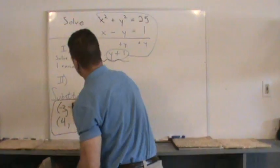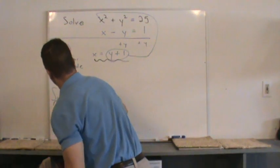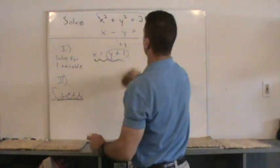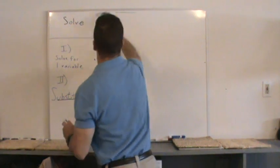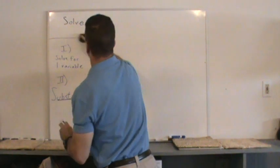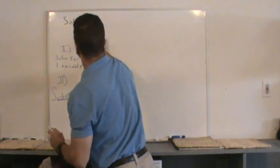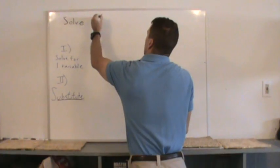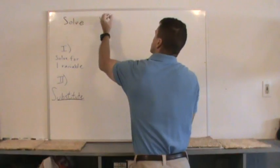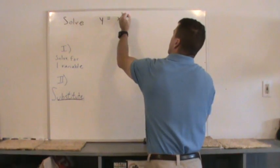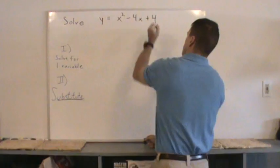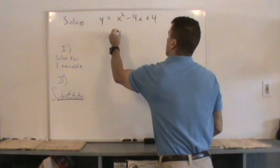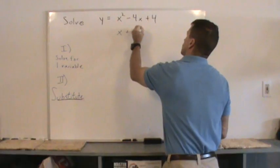So we're going to solve it by substitution. Let's take a parabola, y equals x squared minus 4x plus 4. And let's take a straight line, x plus y equals 2.